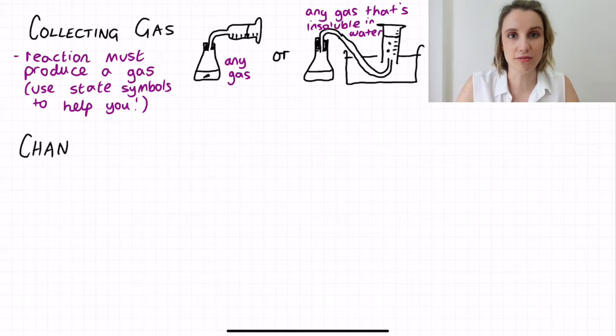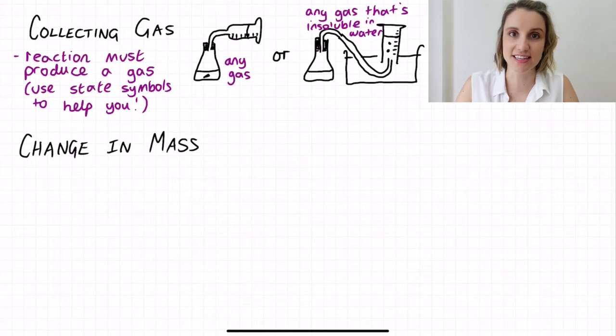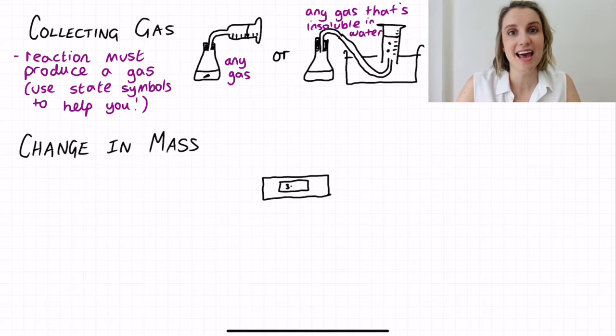Another way that we can measure a rate of reaction is by measuring change in mass of our reaction vessel. To do this we put our reaction vessel on top of a balance and we monitor how the mass changes over time.